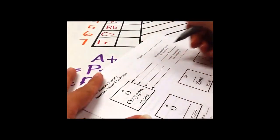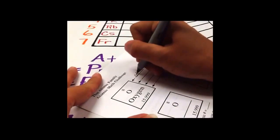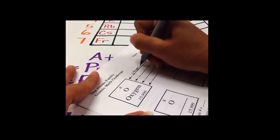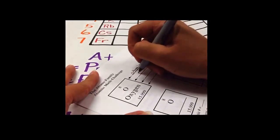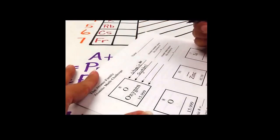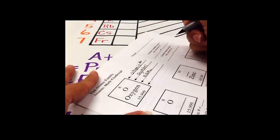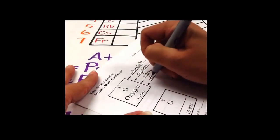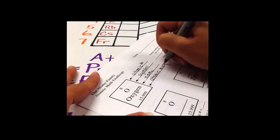We know that this top number is what? It is your atomic number. The O is our symbol of the element. This is the name of the element, and this is the atomic mass of the element.